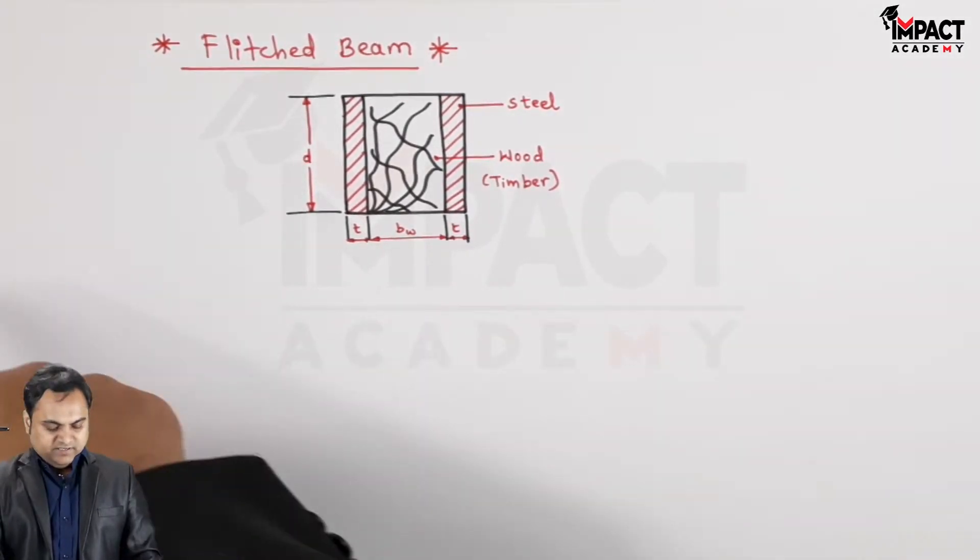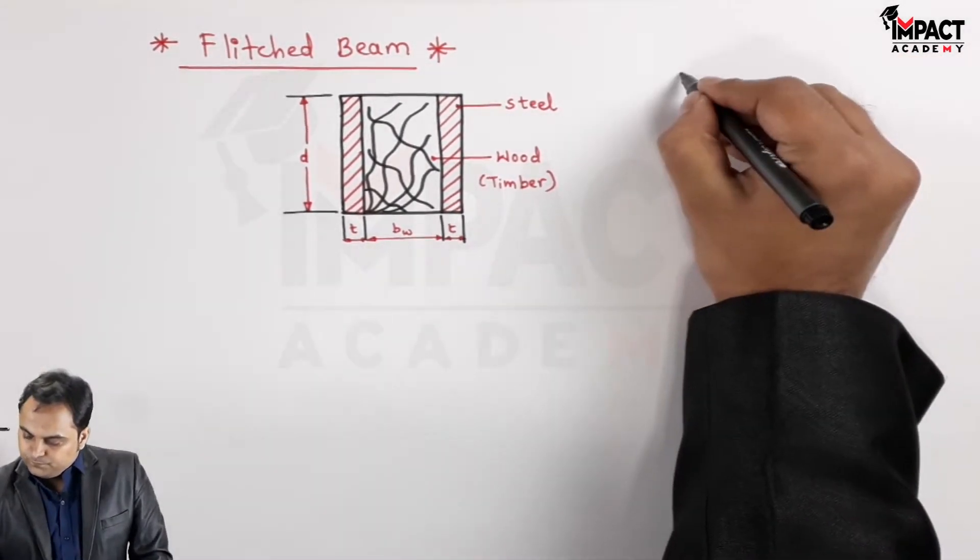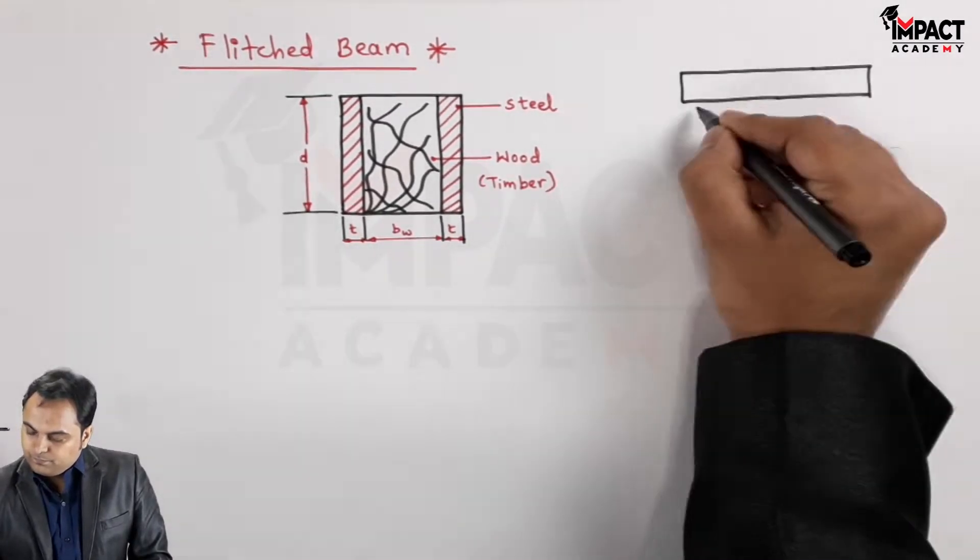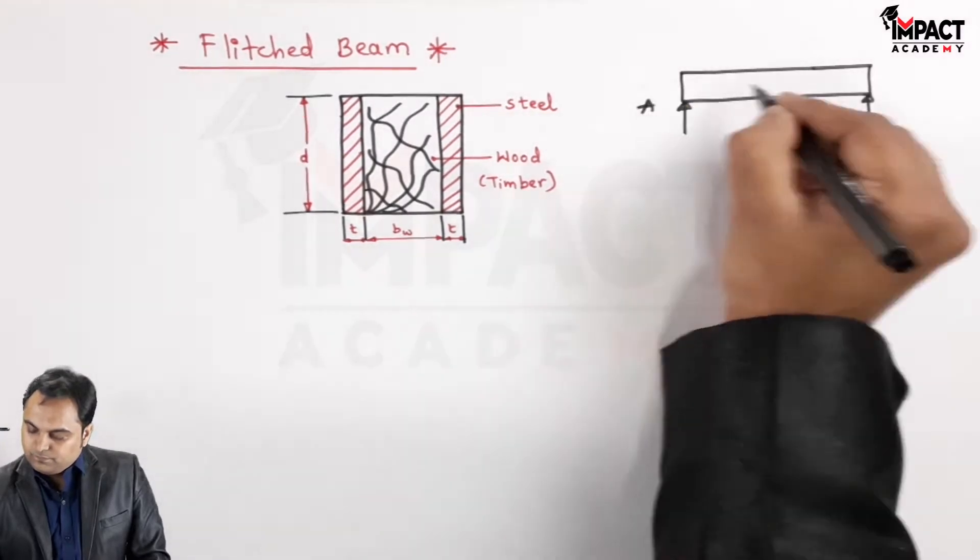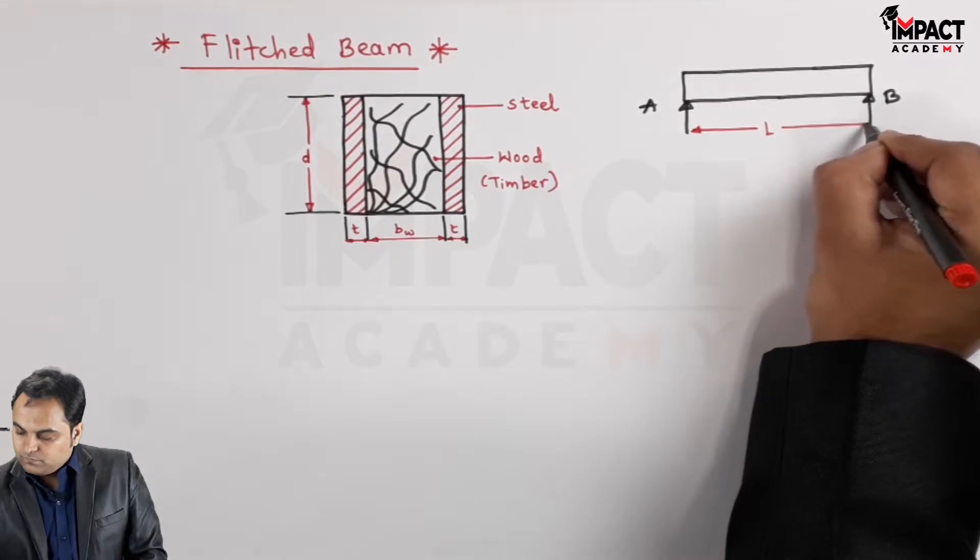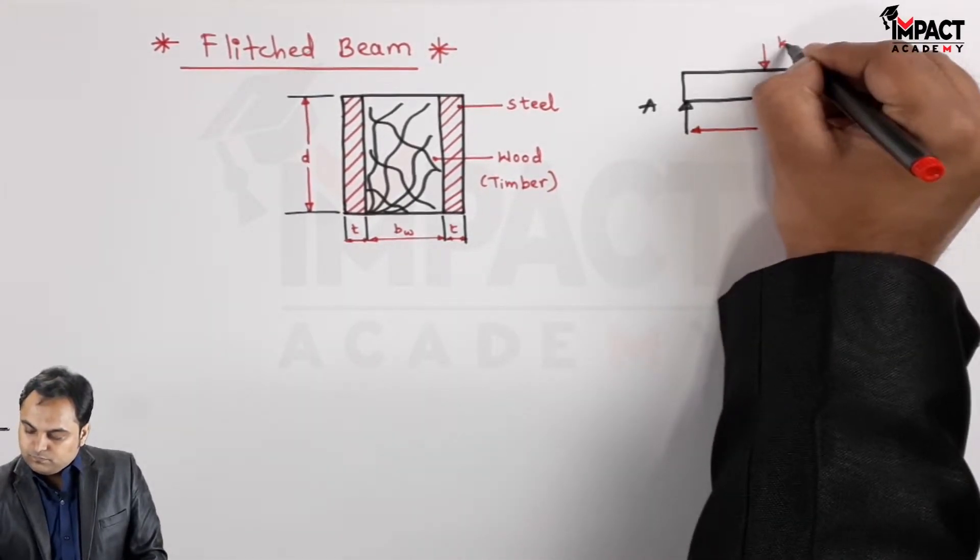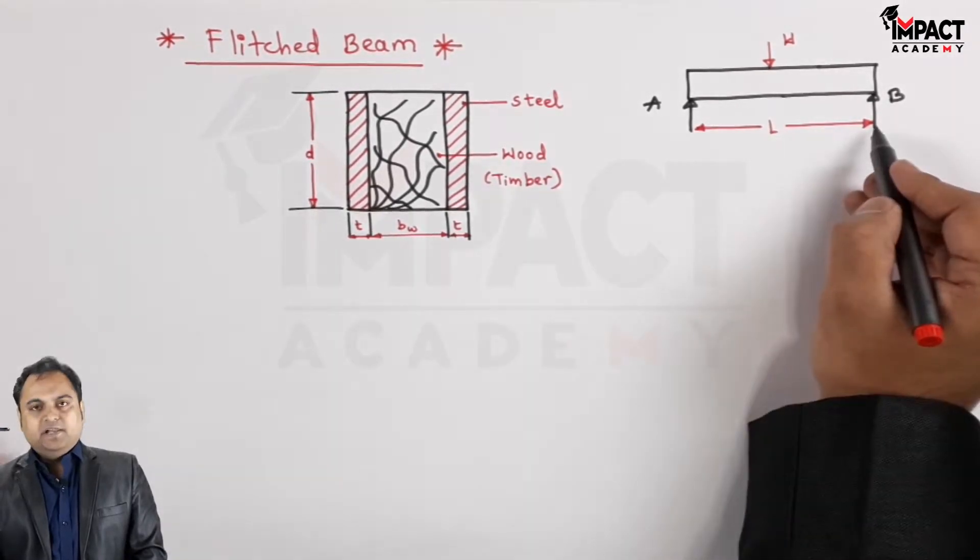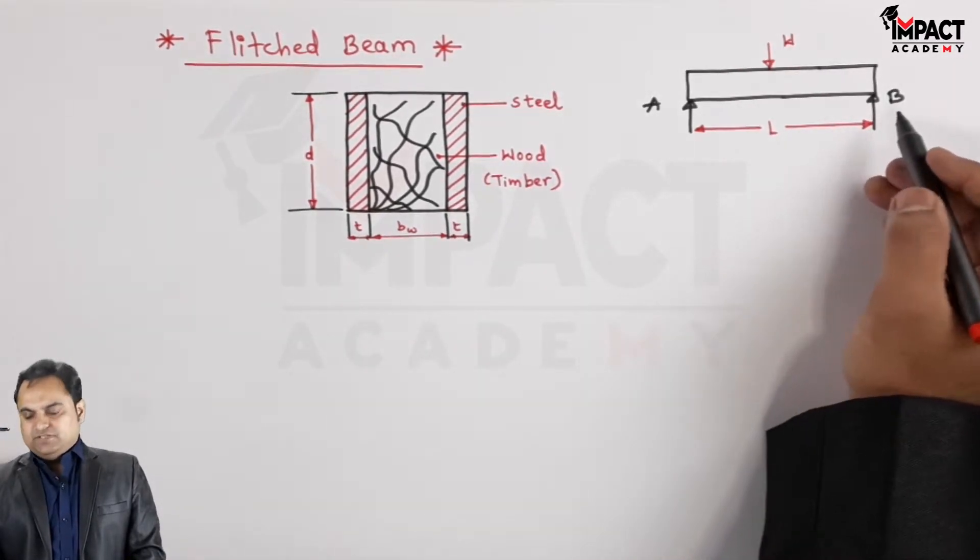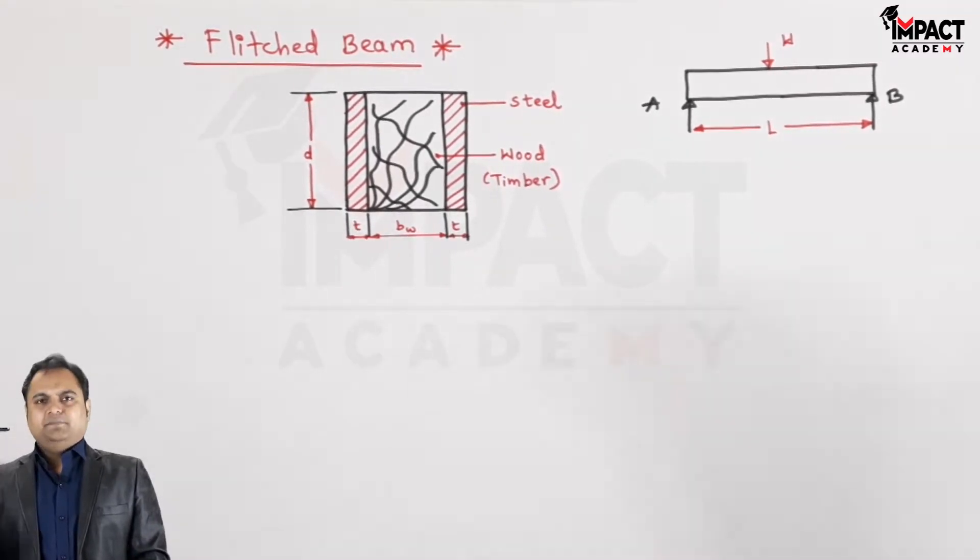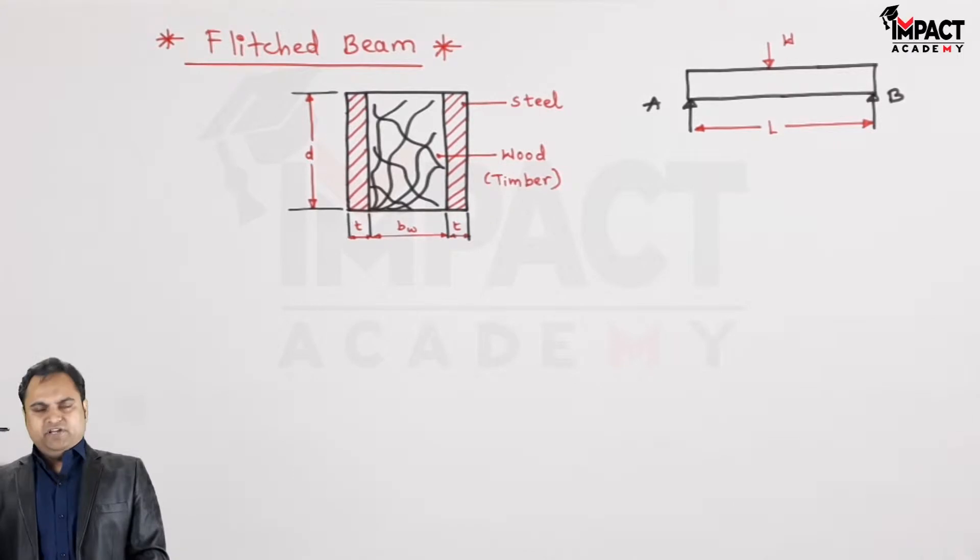Now what happens in case of a beam? Beam is a horizontal member having length l supported at A and B just for an example because the supports may be also of different types, like it can be supported at one end free at the other as we call it as cantilever beam.